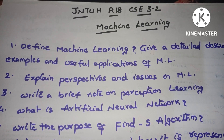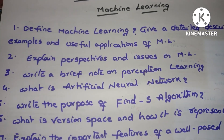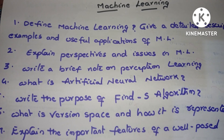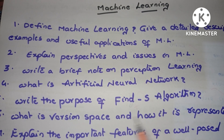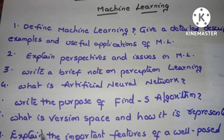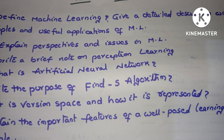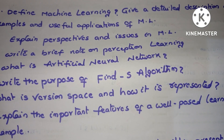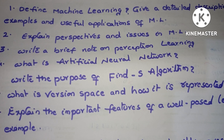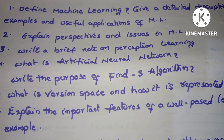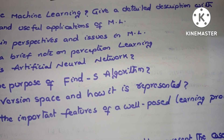Next one is: what is artificial neural networks — important question. Next one is: write the purpose of Find-S algorithm. Next one is: what is version space and how it is represented. Next question is: explain the important features of a well-posed learning problem with an example.